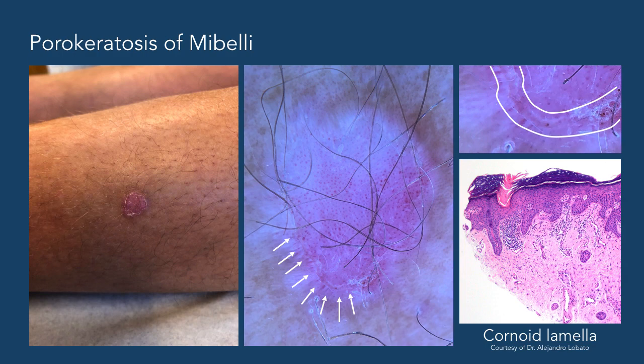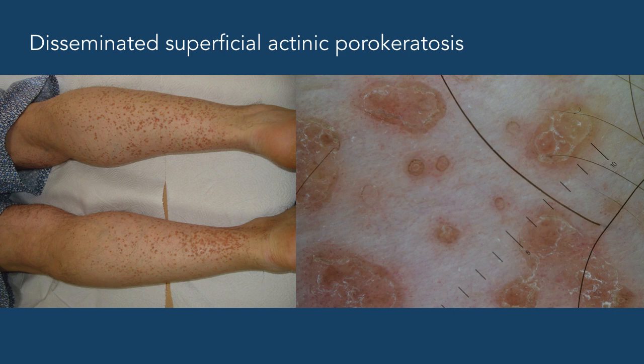In disseminated superficial actinic porokeratosis, or DSAP, patients develop multiple porokeratoses, usually on their lower arms and/or legs, with a symmetric distribution. It is considered an inherited autosomal-dominant keratinization disorder, primarily affecting fair-skinned patients. It is more common in women and usually debuts after 35 to 40 years of age.